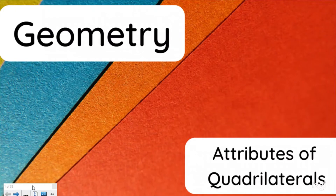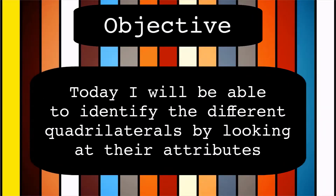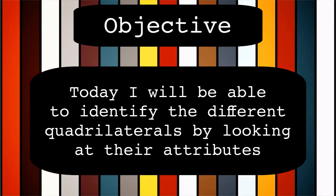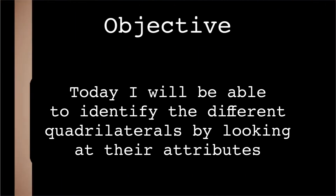What up everybody? Back again here with our geometry unit. We are talking about attributes of quadrilaterals today. So let's shape up and see what our objective is today. Today I will be able to identify the different quadrilaterals by looking at their attributes.